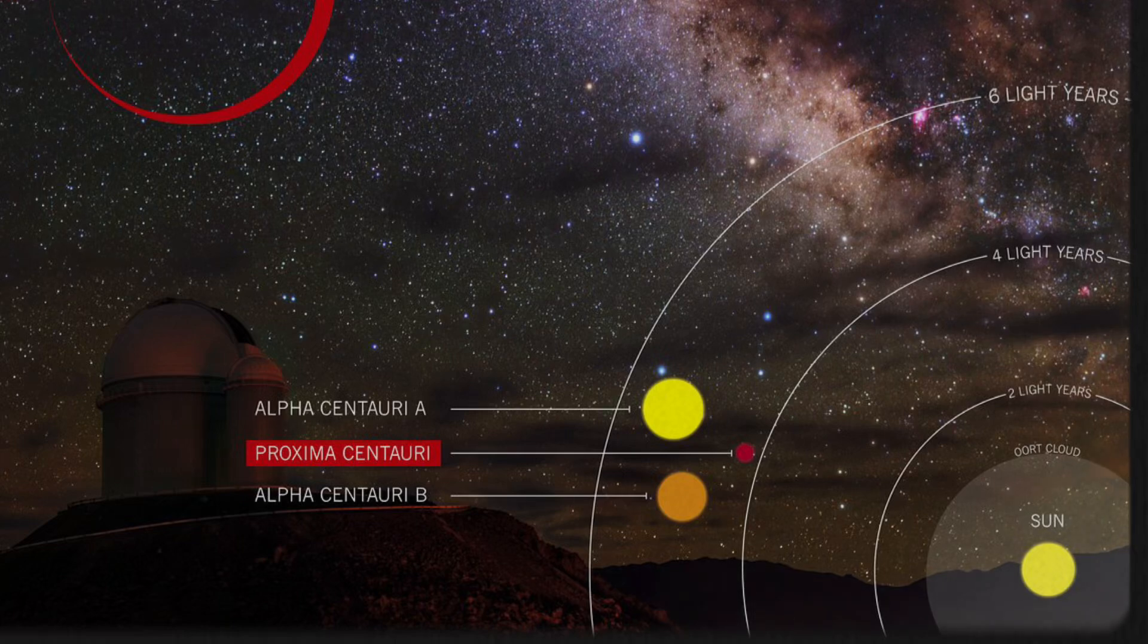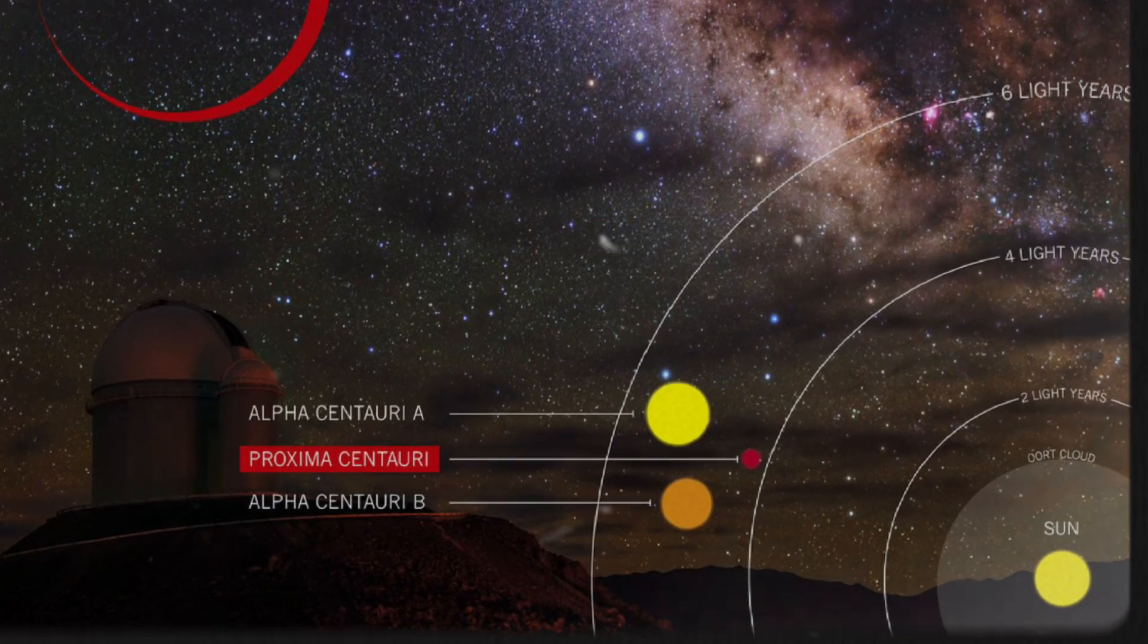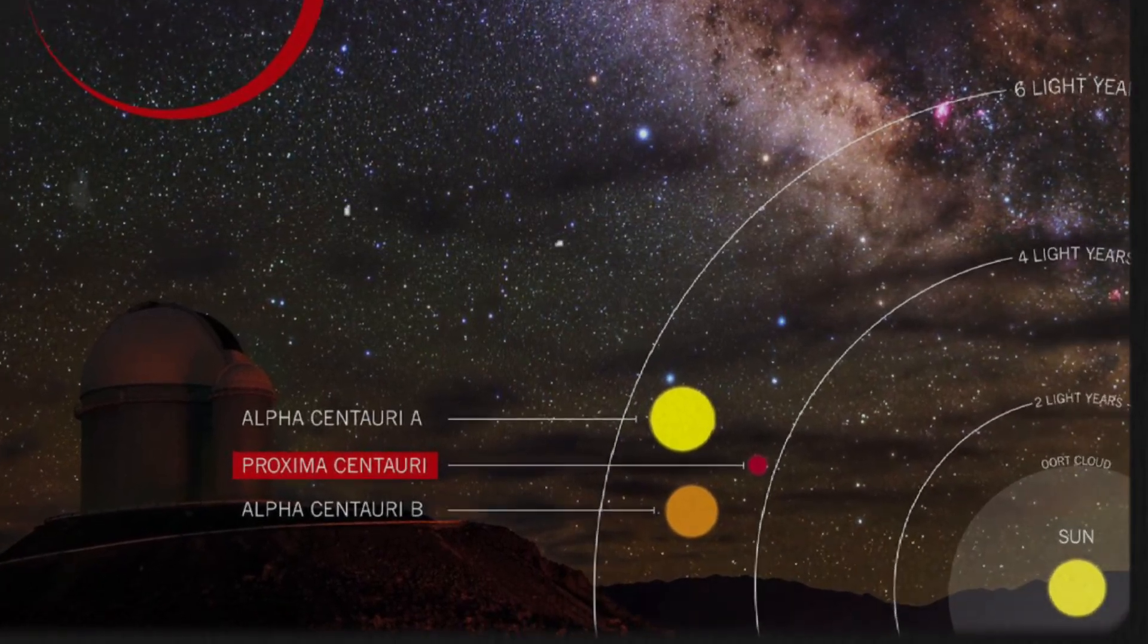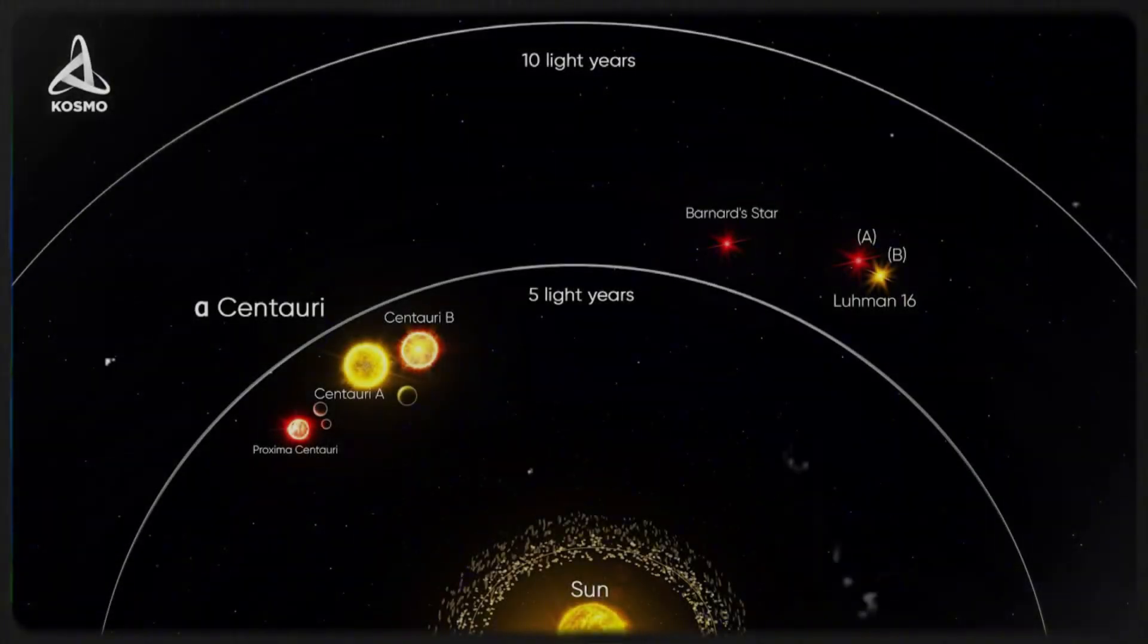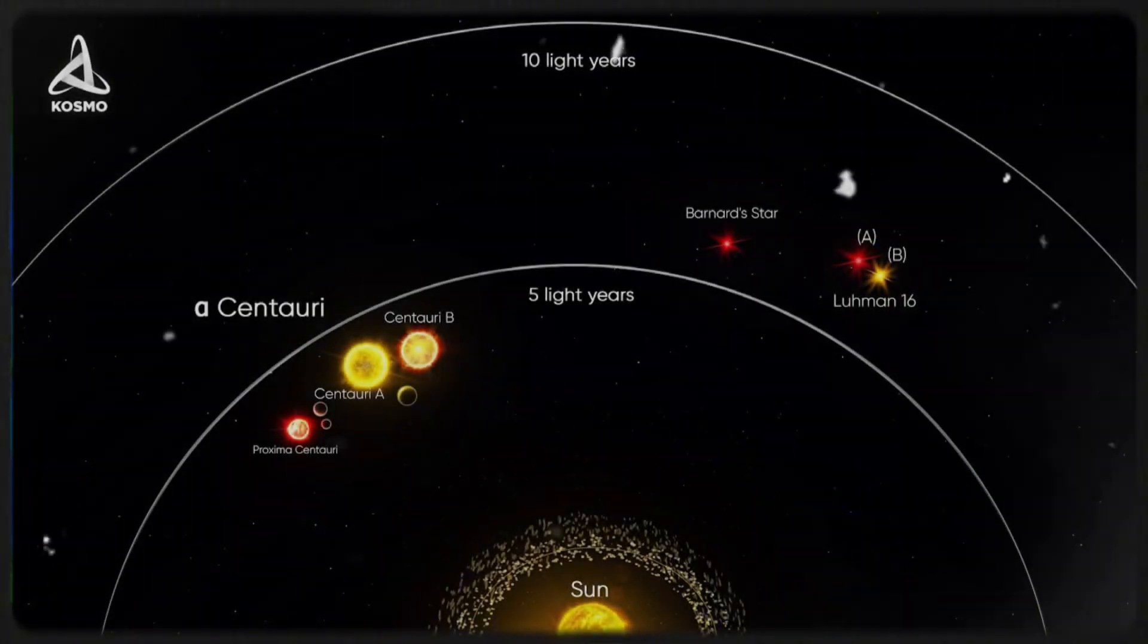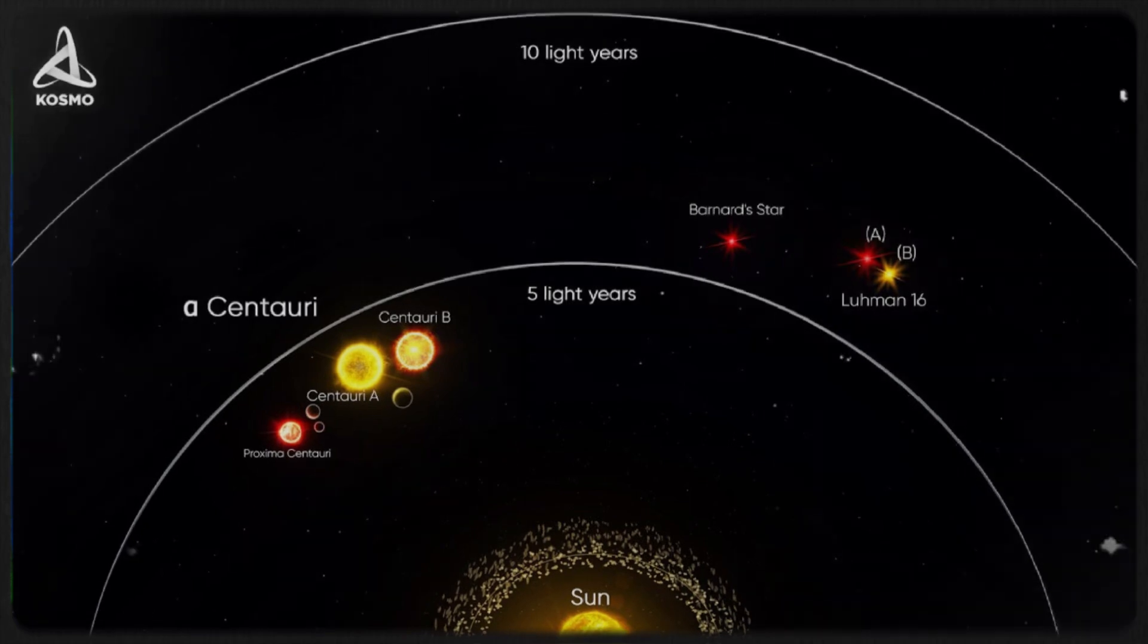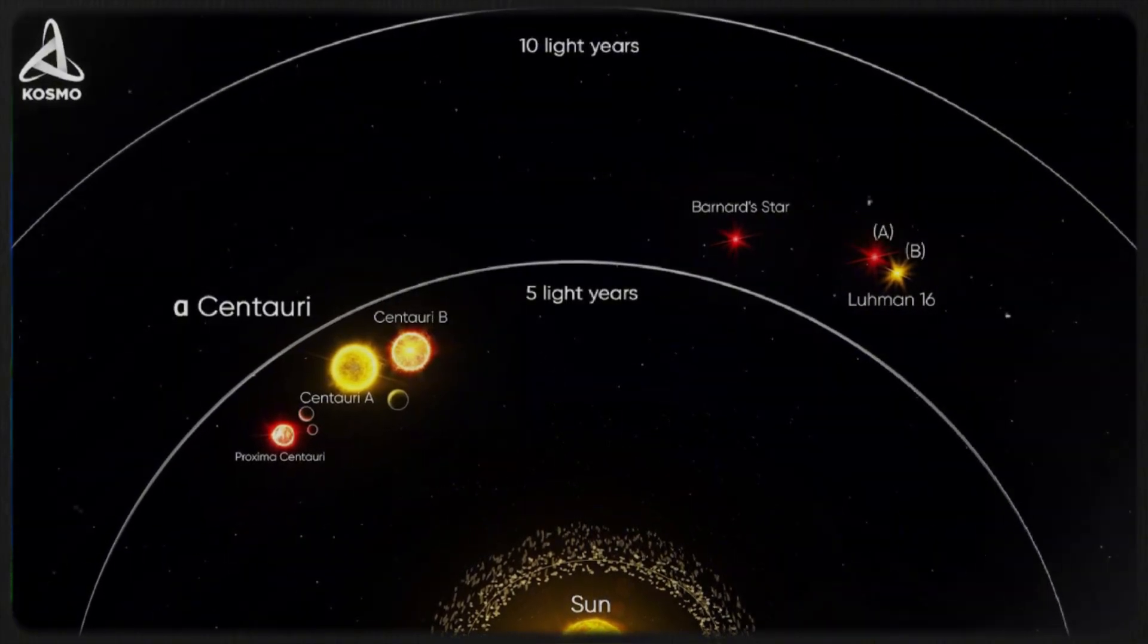The third brightest star in our sky belongs to a triple star system, which includes the binary pair Alpha Centauri A and B, as well as Alpha Centauri C, also known as Proxima Centauri. Alpha Centauri A and B are close stellar companions, both similar to the Sun.